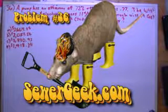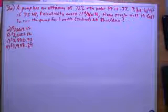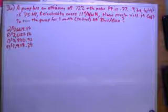Problem number 36. Wastewater collection math book from SewerGeek.com. The pump has an efficiency of 72% and a motor has a power factor of 0.77.